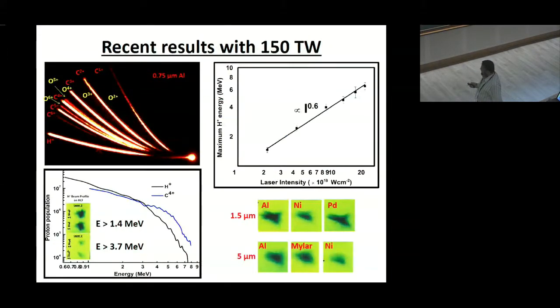So, these are some results on the 150 TW laser. So, here we observed proton energy up to 8 MeV but later on by optimizing the pulse contrast and other things we could get up to 12 MeV proton and carbon is more than 14 MeV. So, these are the scaling laws which we observed for proton and these are the proton beam recorded on RCF film using different foil thicknesses.